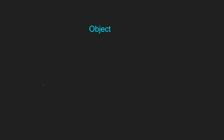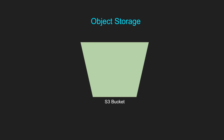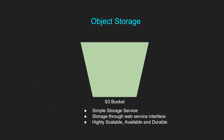Let's start with object. So what is an object? You can think of object as literally any file like your text file, image file, music, movie file, etc. And what is object storage? Object storage is a computer data storage architecture that manages data as objects, such as S3, also known as Simple Storage Service. It's storage through a web service interface — you don't need to attach a server to grab the stuff.